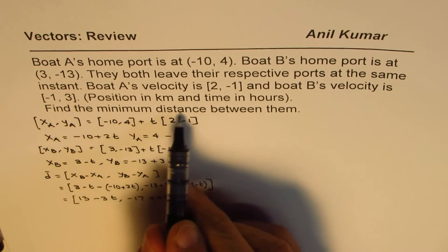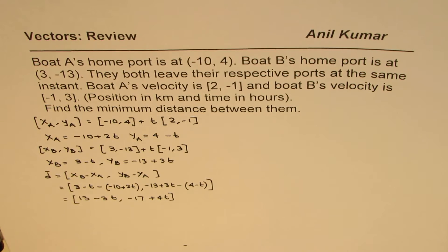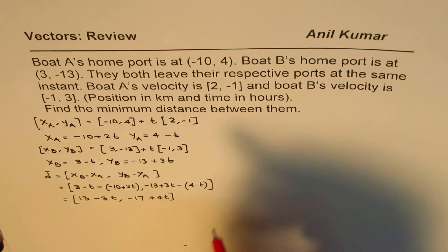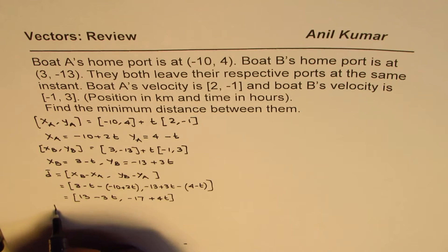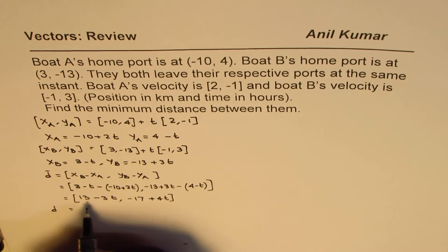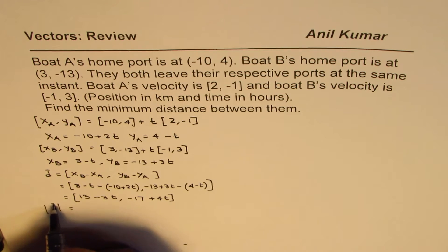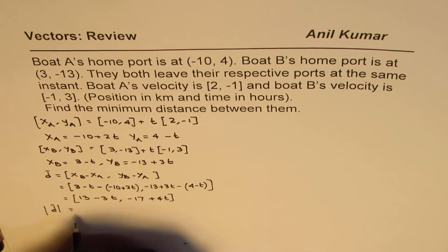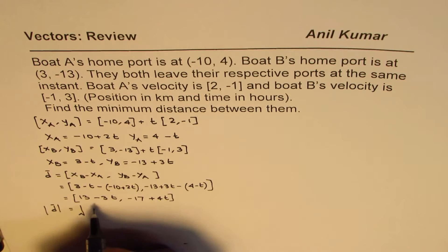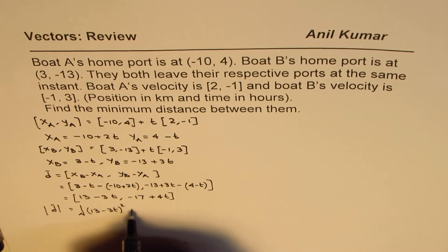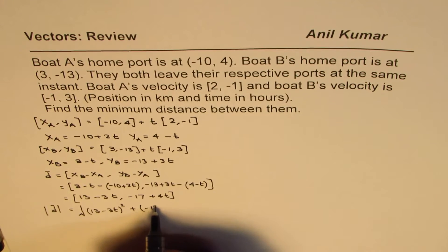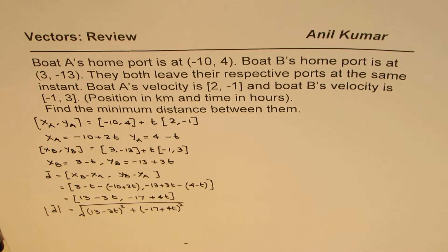Now we need to minimize distance. Minimum distance will also result in minimum square of the distance. Basically what we can do is we can square this. The magnitude of this distance is square root of all this. Magnitude of the distance will be √[(13 - 3t)² + (-17 + 4t)²]. That becomes the magnitude of distance.